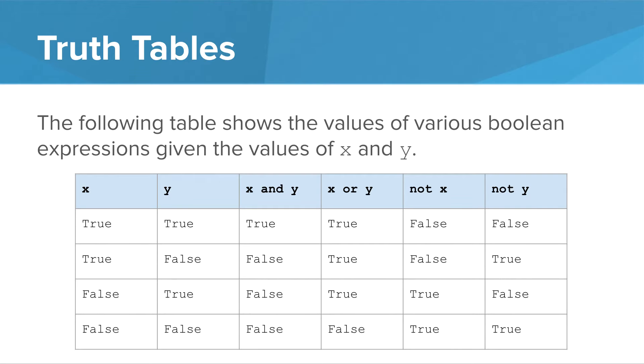The following table shows the values of various boolean expressions given the values of x and y. So we see that if x is true and y is true, then x and y are true, x or y is true, and not x is false, and not y is false.